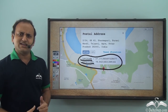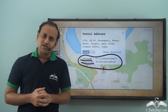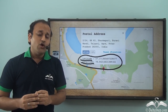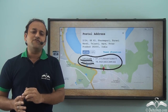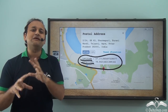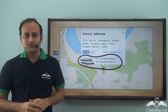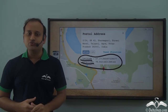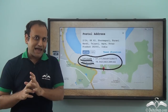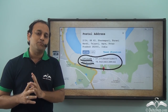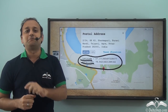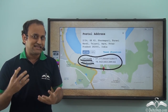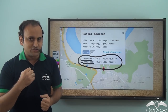Now what are these latitudes and longitudes? These are very unique numbers which are stored for every place on earth, and because of these latitudes and longitudes, Google Maps is able to pull the right location of a place. So let's see what these latitudes and longitudes are.